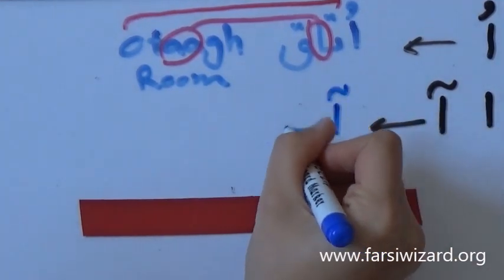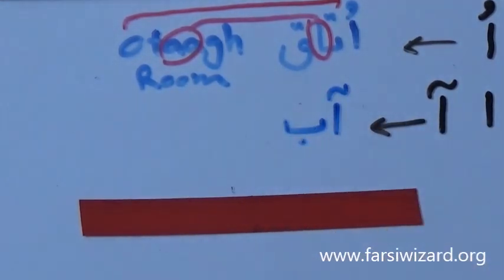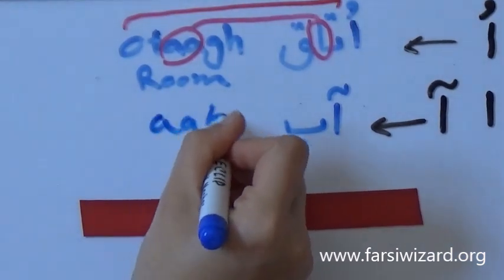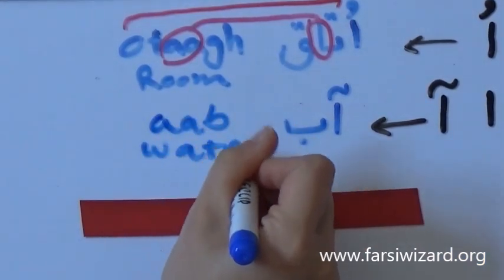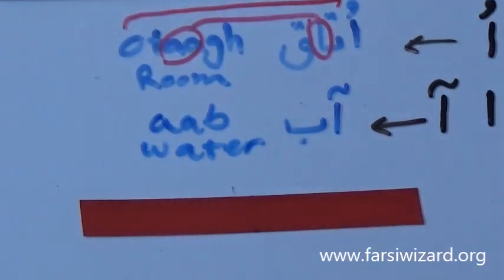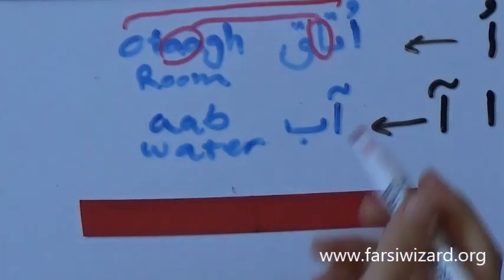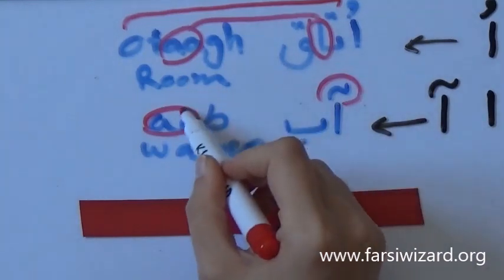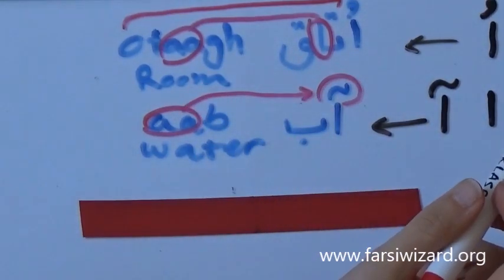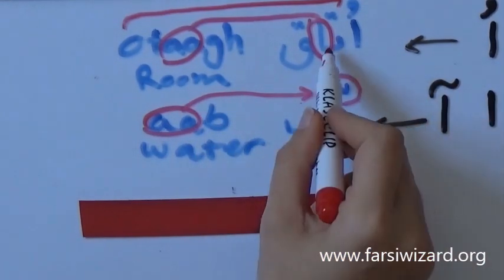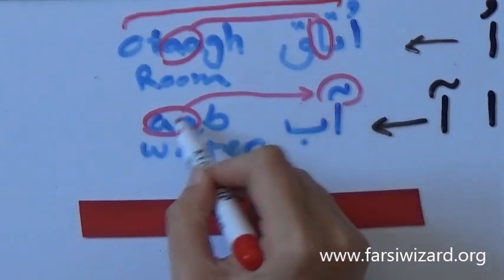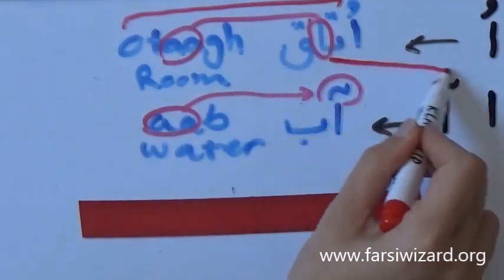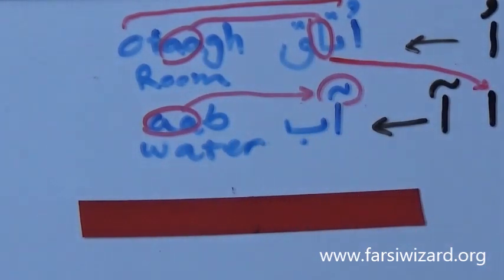Now, here we have an example for the word, basically the letter Aleph with the hat, which is A, and the word is Ab. Again, Ab, the hat appears because A is the first letter. As you can see, the other A did not have a hat because it was in the middle of the word.